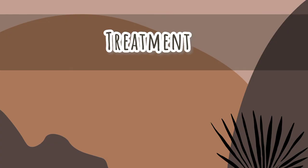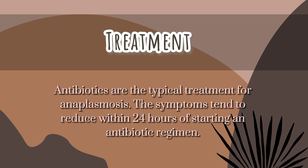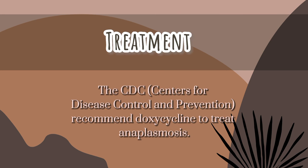For the treatment of anaplasmosis, antibiotics are the typical treatment. The symptoms tend to reduce within 24 hours of starting an antibiotic regimen. The Centers for Disease Control and Prevention recommend doxycycline to treat anaplasmosis.